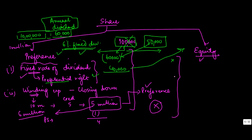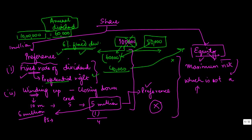So preference shareholders have a preferential right both in terms of dividend payments and in terms of winding up. Equity shareholders are the residuary class — they take the maximum risk. Under the Companies Act, equity shares are defined as shares which are not preference shares. If you have all these preferential rights, you are a preference shareholder; if you don't, you are an equity shareholder. These are the two types of share classification.